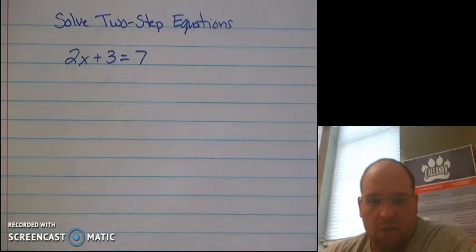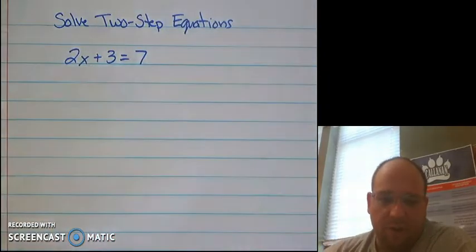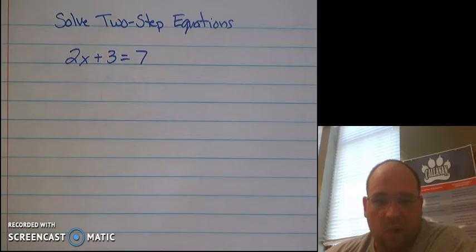The reason these are called two-step equations is because we're going to have to do two mathematical operations in order to solve and find out what this value of this variable x is equal to. We need to keep in mind the order of operations when we're solving these equations because we're going to work backwards from the order of operations.